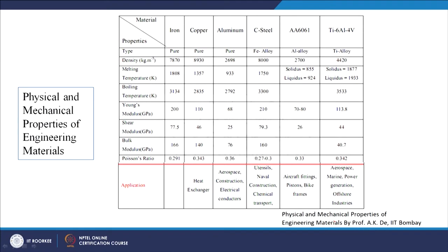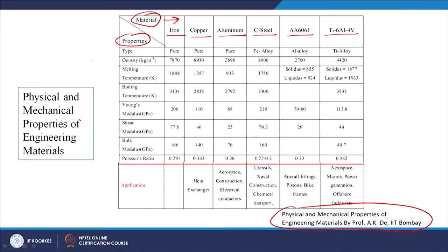This last slide shows physical and mechanical properties of engineering materials — the source is from Professor A.K. Day, IIT Bombay. We can see different types of materials listed: iron, copper, aluminium, steel, aluminium 6061, titanium 6AL4V — different types of metals and alloys. The properties given include density (which falls under physical properties), melting temperature, boiling temperature, Young's modulus (mechanical), shear modulus (mechanical), bulk modulus (mechanical), and Poisson's ratio (mechanical). So a combination of physical and mechanical properties are given in this table for various engineering materials.